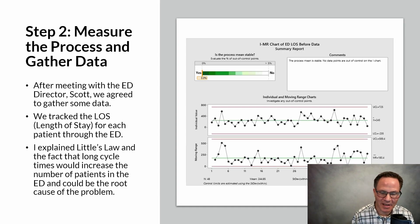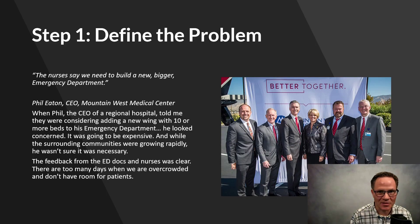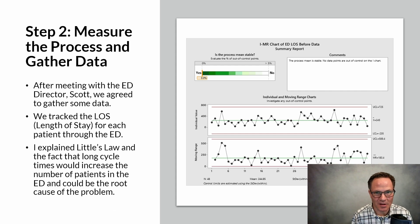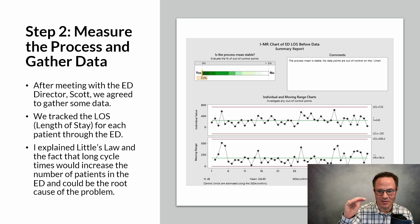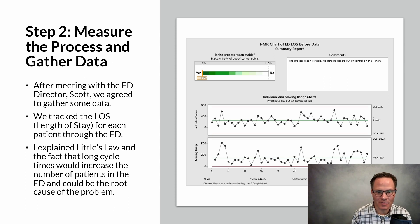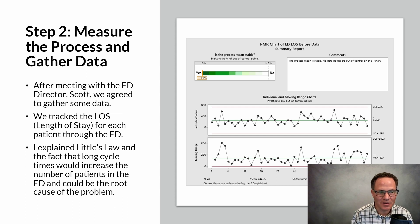So we gathered some data in the Measure phase. The data told us our average length of stay was 245 minutes — that seems excessive. What if we could get that down to 120 minutes, which is two hours? According to Little's Law, we can handle twice as many patients if we get patients through the building twice as fast.